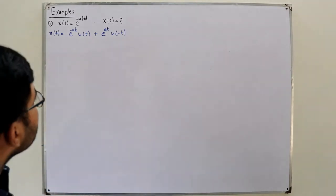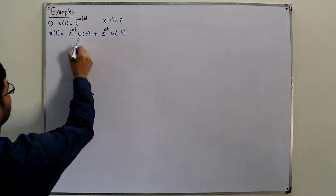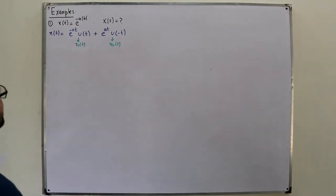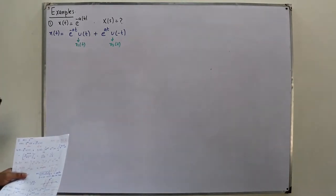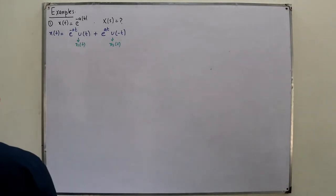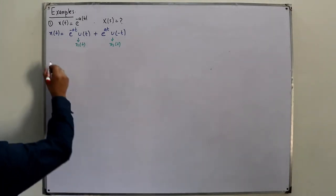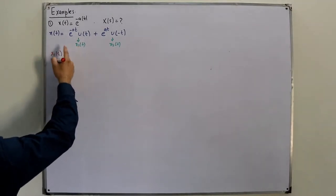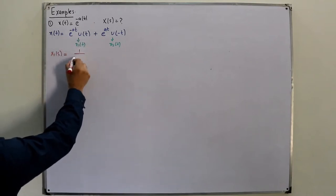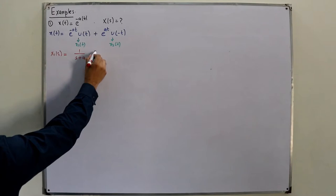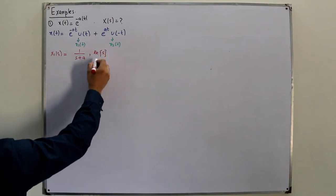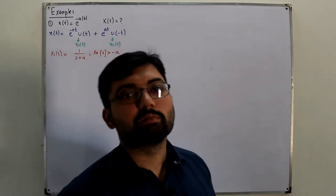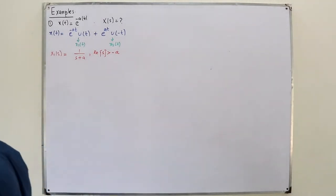Let's name these two parts: x₁(t) = e^(-at)u(t) and x₂(t) = e^(at)u(-t). We know x₁(t) very well. Its Laplace transform X₁(s) = 1/(s+a) with ROC: Re(s) > -a.